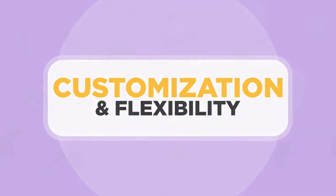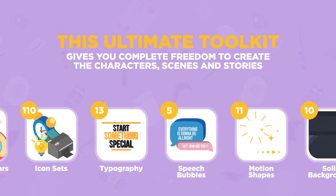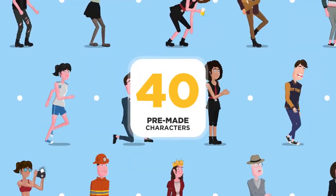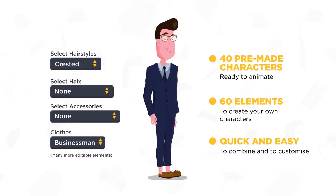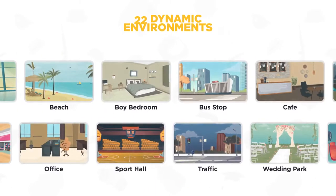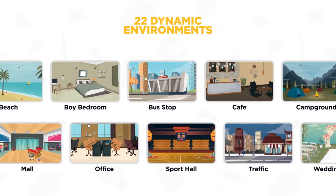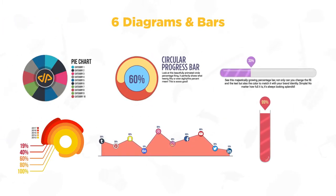This ultimate toolkit gives you complete freedom to create the characters, scenes, and stories that your audience needs to see. There are 40 pre-made characters with over 10 billion combinable outfits and poses. You can customize everything from skin texture and facial expressions to hairstyles and accessories, and then place your characters within our 22 dynamic environments. You can adjust the color palette and ambience, and even add speech bubbles and animated icons. There are also six customizable diagrams and bars to choose from, which are perfect for visual explainers and video marketing.